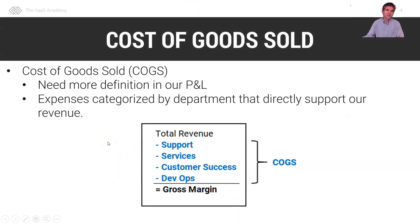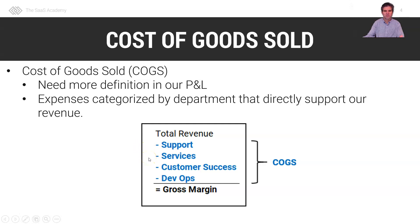But in SaaS, we need to have a little more definition in our cost of goods sold. We still have our total revenue, but we need the departments within our COGS that directly support our revenue streams. In SaaS, this traditionally includes support, professional services, customer success if they don't sell, and DevOps — think our hosting infrastructure.